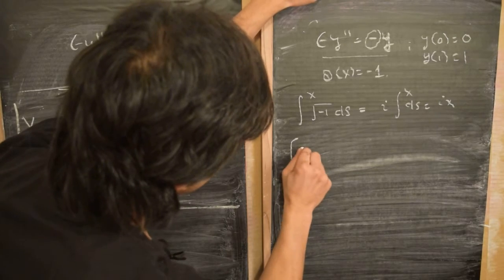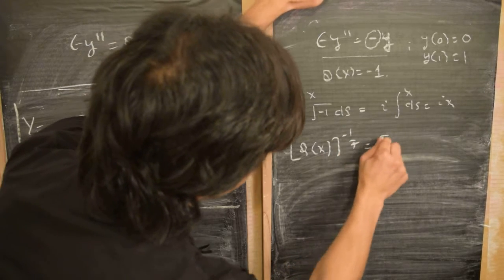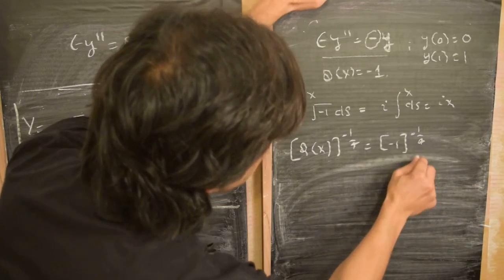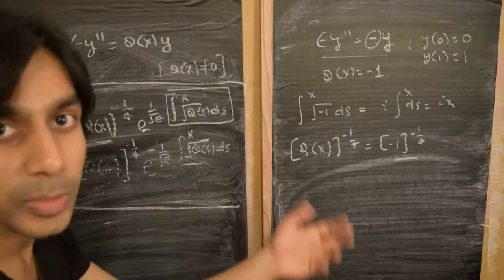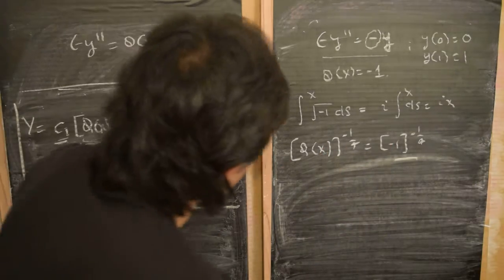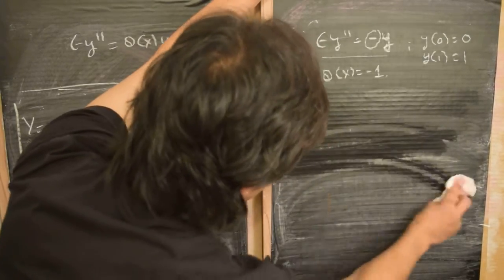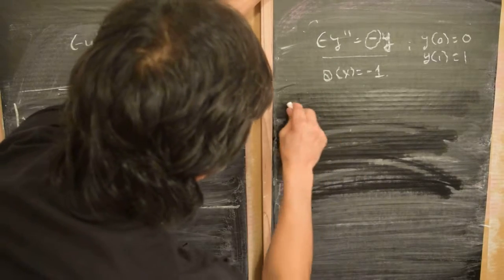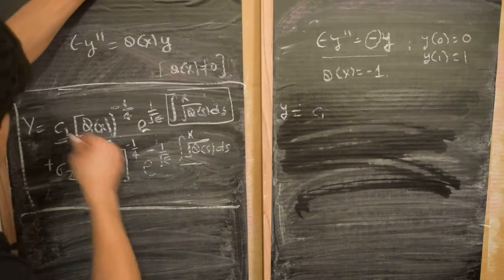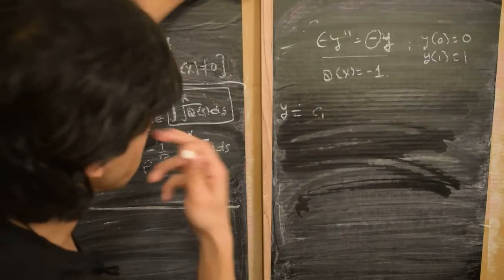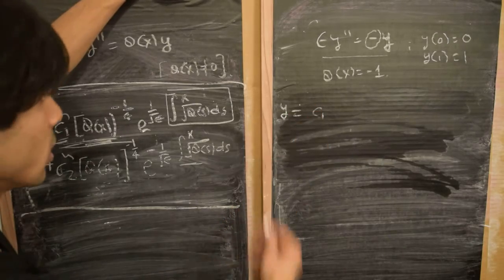We also have the factor q(x)^(−1/4), which in our case is (−1)^(−1/4). This is just some constant, so we can absorb it into the constants c₁ and c₂ and define new constants c̃₁ and c̃₂, since this is just some constant complex number.